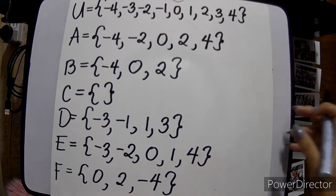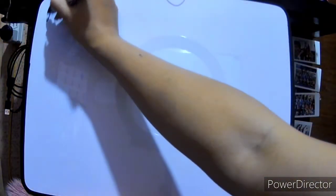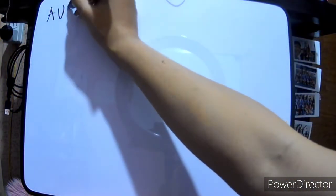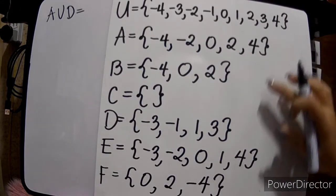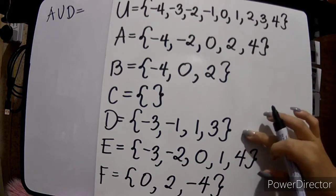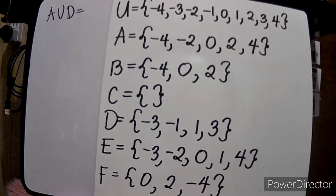Let's first get A union D. When we say union, you will be combining the elements of A with D. When combining, it's better to write them in increasing order or in range form.